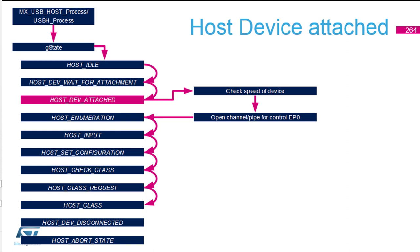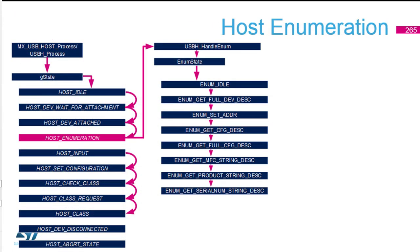If you go to super speed, it's not mandatory to handle low speed — it's not mandatory, but it's common. So back to the topic: we check the speed, open endpoint zero, and do the enumeration start, going through all steps of enumeration: device descriptor, configuration descriptor, and at the end the string descriptors.